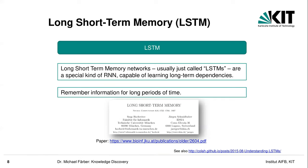The solution back then, in the 1990s, was the long short-term memory, short LSTM. These were actually not reinvented but rediscovered more around 2010, so quite late, but they had actually been proposed quite early. LSTMs are a special kind of RNN and they were designed to learn long-term dependencies.